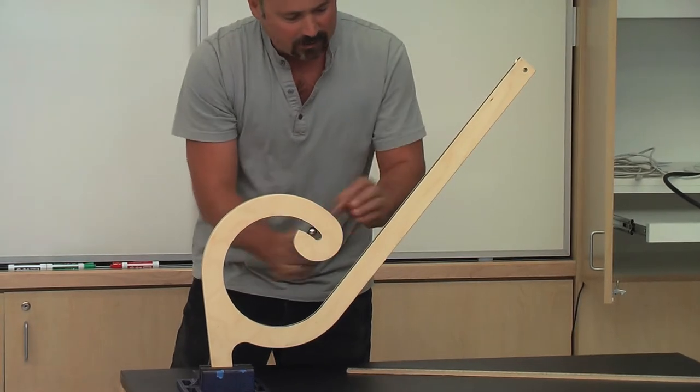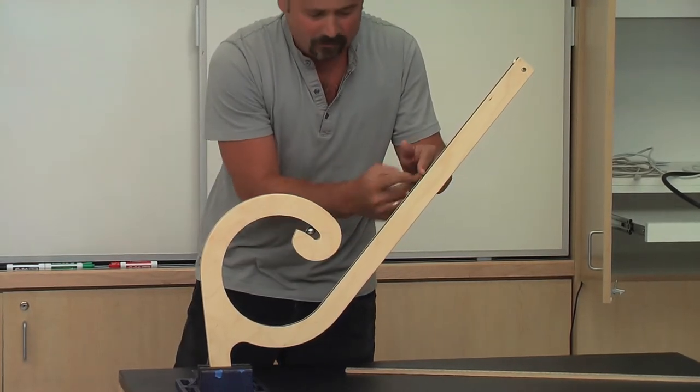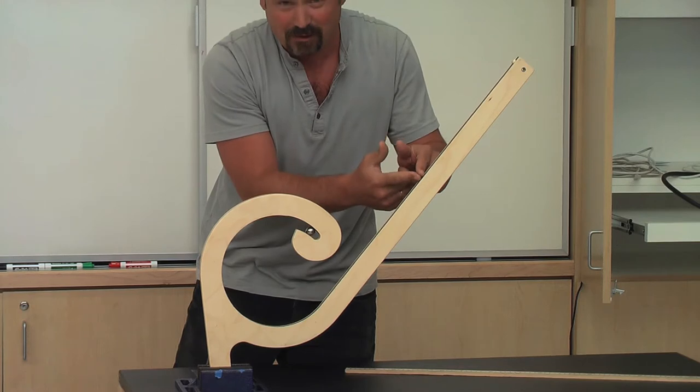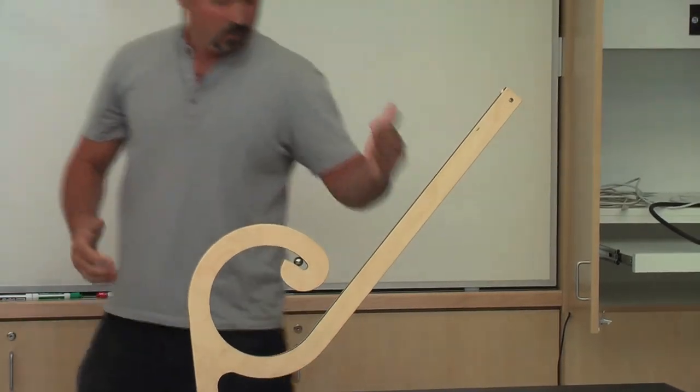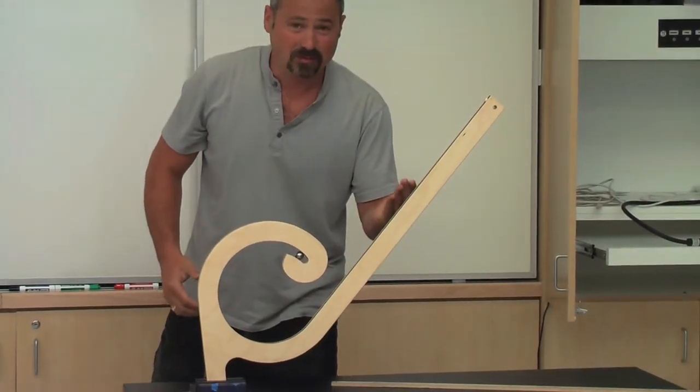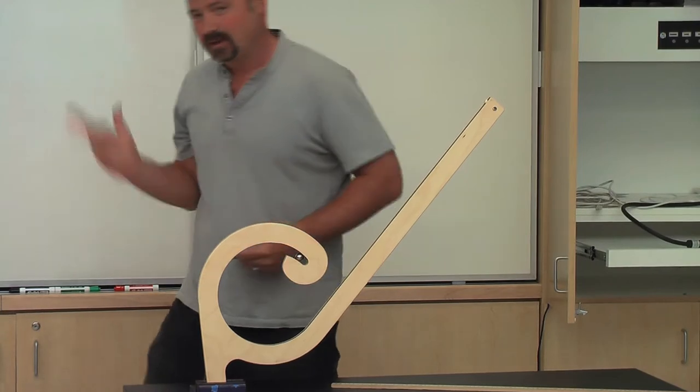So at some point, it'll just barely make the loop, and at any point below that it won't, any point above that it will. Can we find that point? What is that height we need the ball to be at in order to make the loop? We can do that.